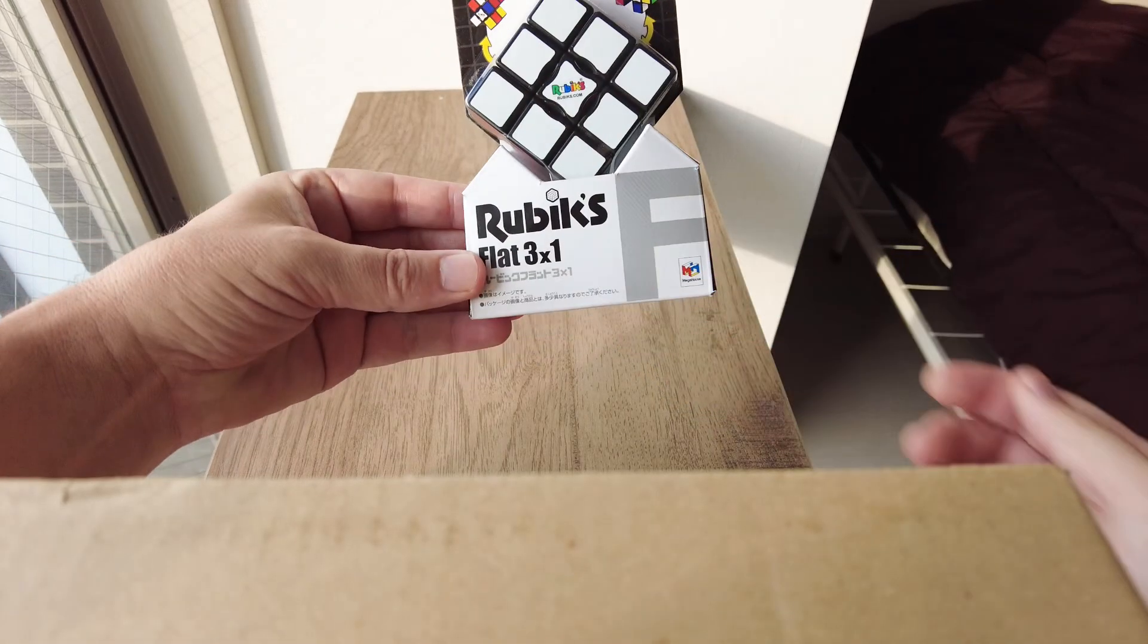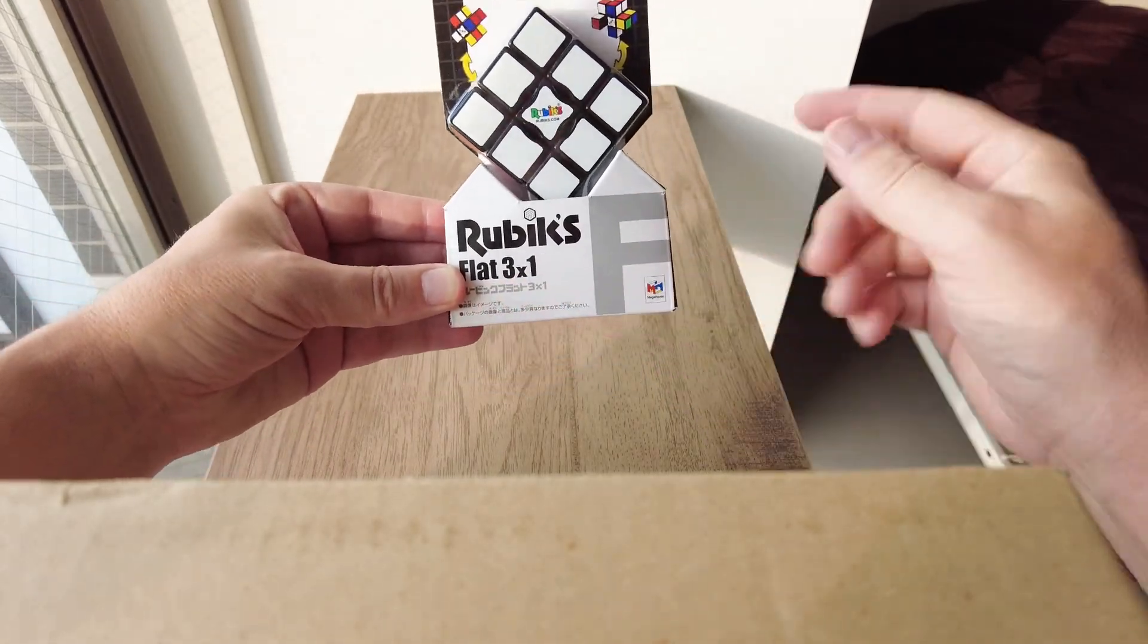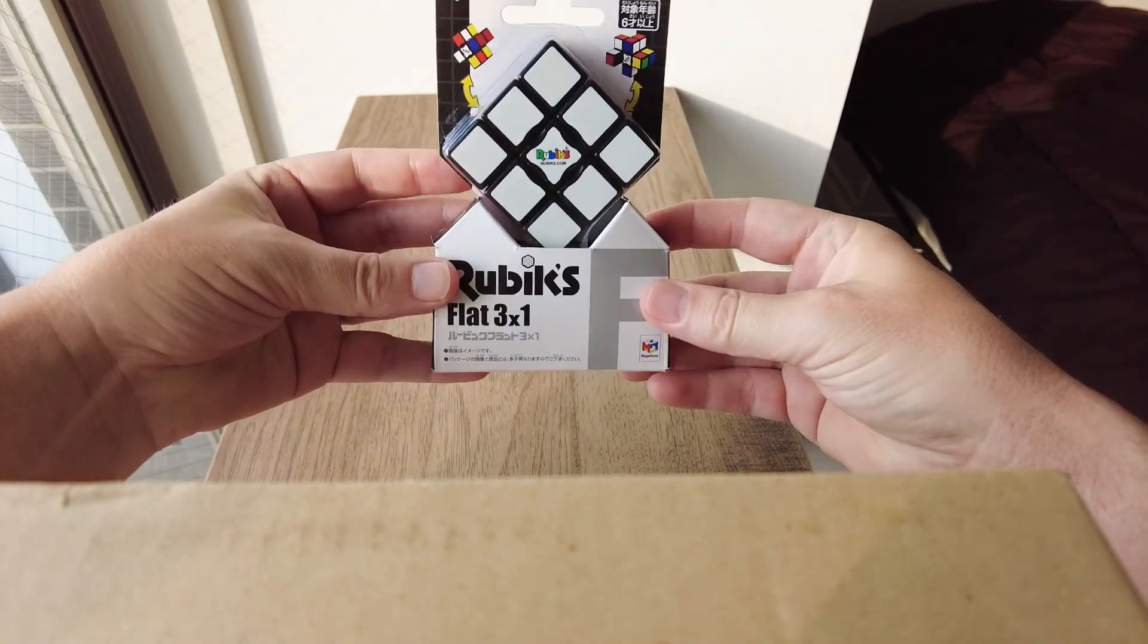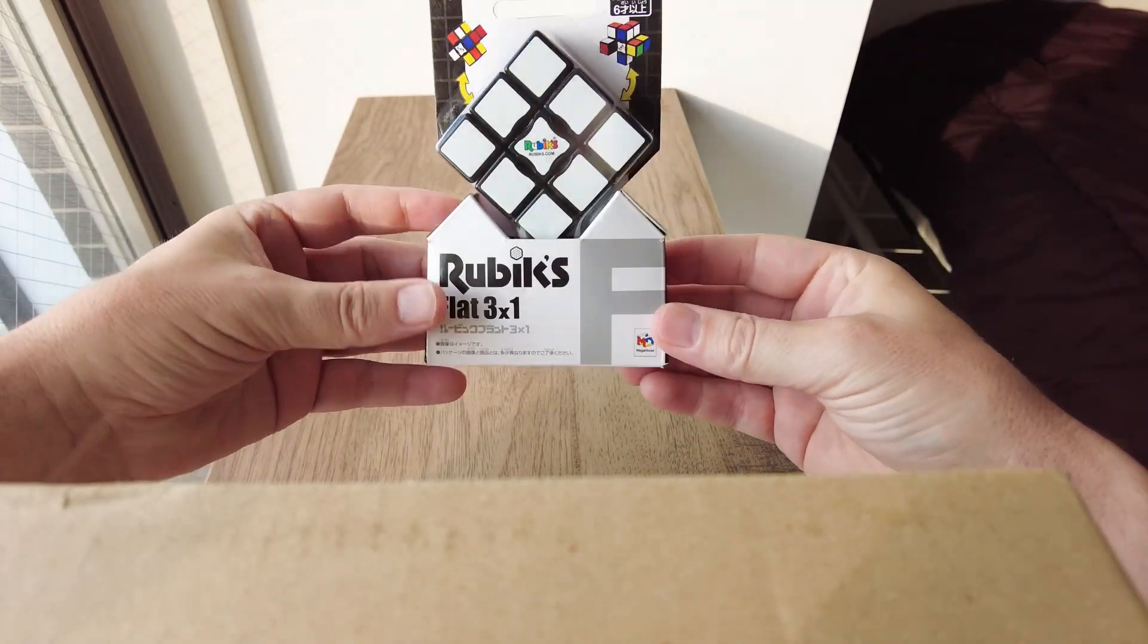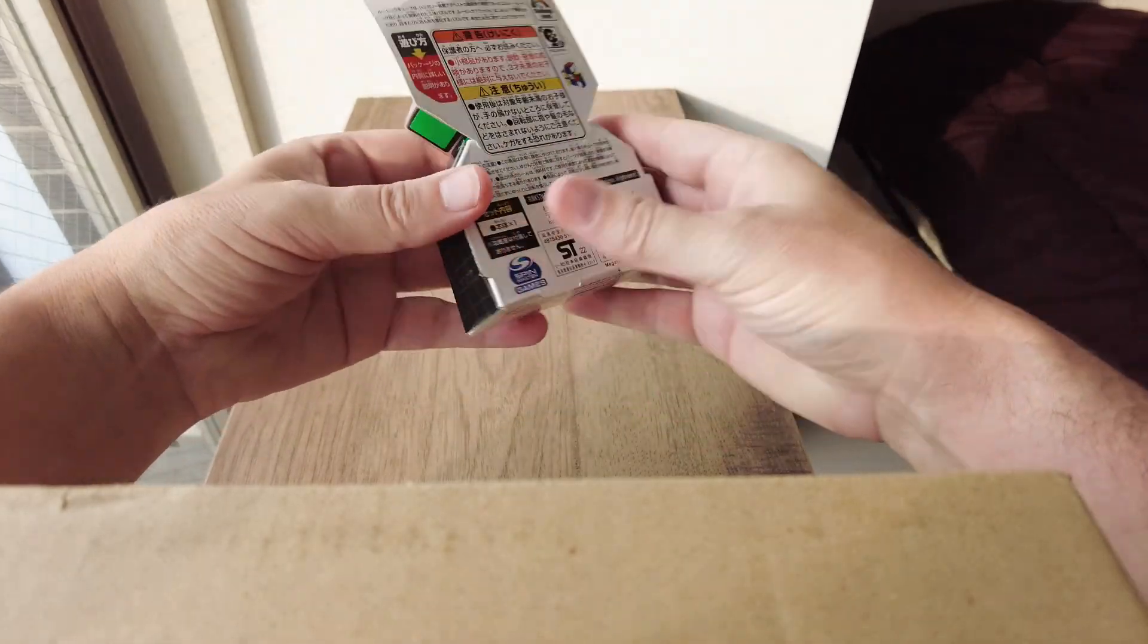Hi everyone, and I'd like to show you this Rubik's Flat 3x1 cube. Sometimes it's called a Rubik's Floppy Cube or a Rubik's Edge. And it comes in a little pack like this.